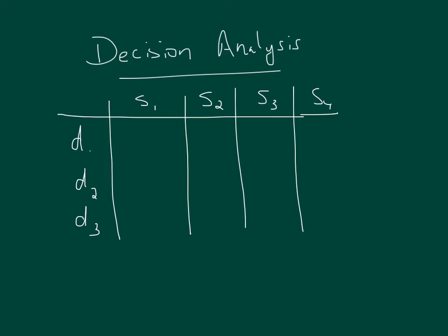Then we would have some payoff — this is a payoff table that we are talking about. These would be numbers in here, and if we are maximizing, then these would usually be profit or revenue. When we are dealing with uncertainty, it means we have no way of assigning probabilities to the outcomes or potential outcomes.